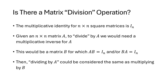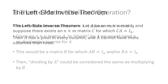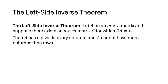We'll talk more about inverses in the next lecture, but for now let's discuss the left-side and right-side inverse theorems. The left-side inverse theorem tells us: if we have an m by n matrix A and an n by m matrix C for which CA equals I, what does that tell us about A? Does that happen for any matrix A, or does it reveal something specific?